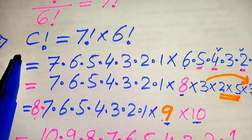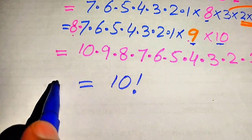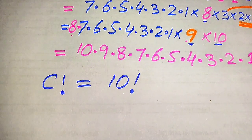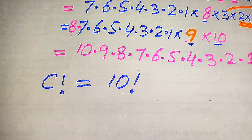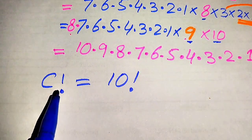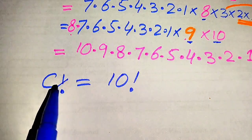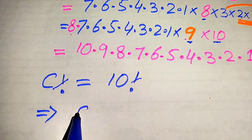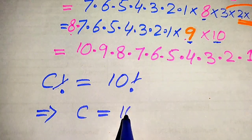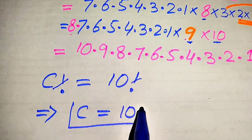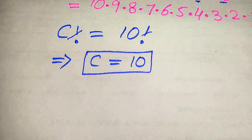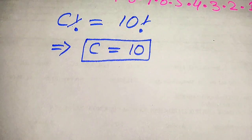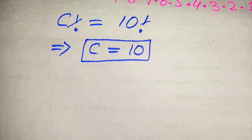On the left-hand side we have c factorial, and on the right-hand side we now have 10 factorial. Since we are solving for c, we see that c factorial equals 10 factorial, the factorial signs cancel, and we get c equals 10. This is the final solution.